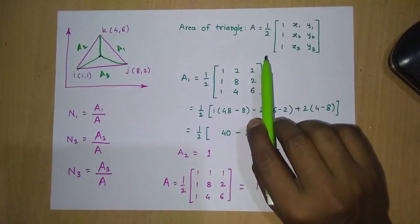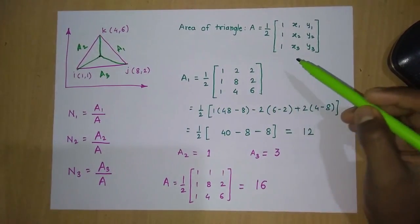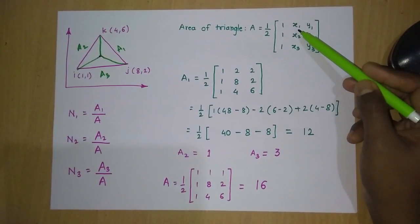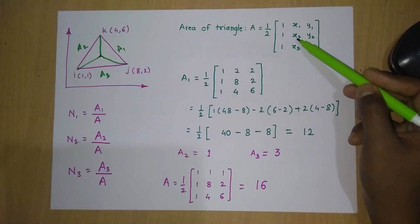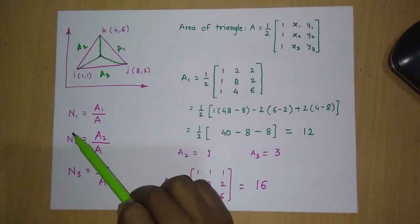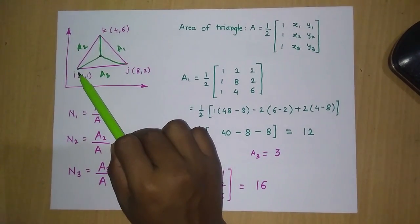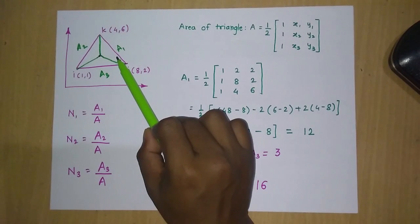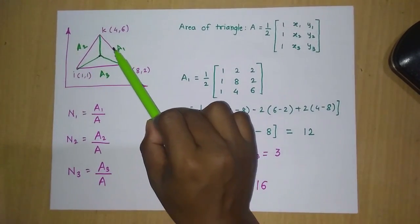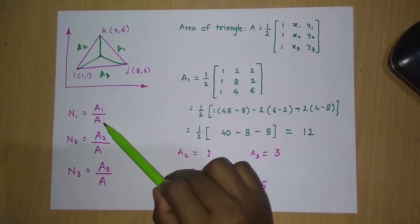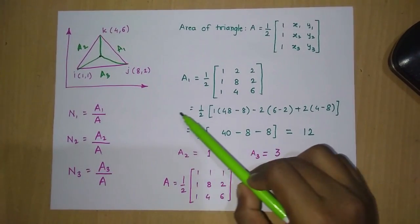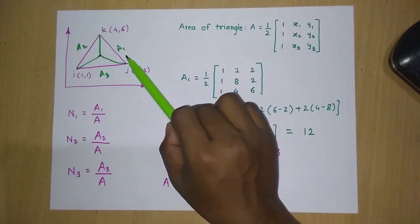To find these areas we use the matrix formula: A = (1/2) × det of the matrix with rows [1, x1, y1], [1, x2, y2], [1, x3, y3]. The shape function N1, corresponding to node i, equals the area A1 in front of that node divided by the total area A of the triangle. Similarly, N2 = A2/A and N3 = A3/A.